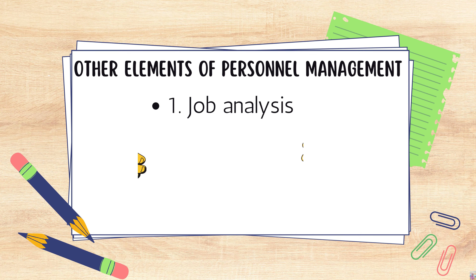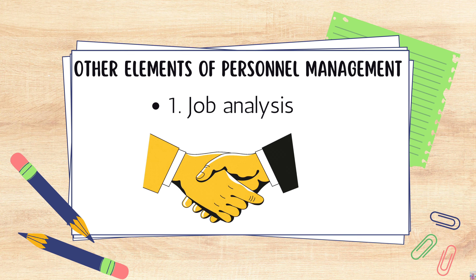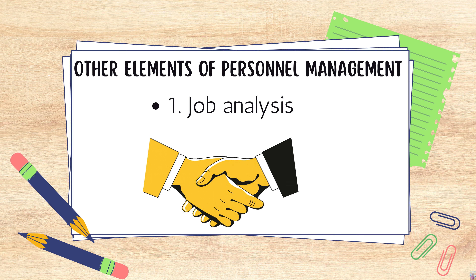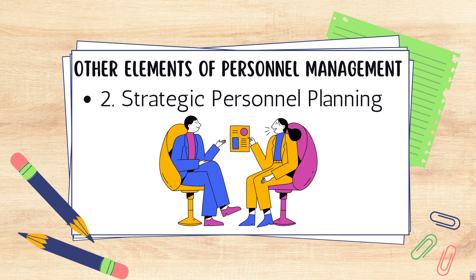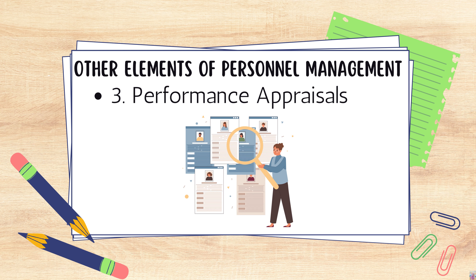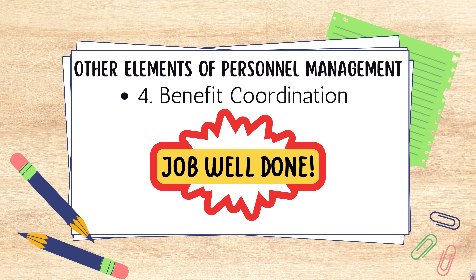Now let's go to the other elements of personnel management. Number one is job analysis — it determines how a position fits into the overall company framework, focusing on the role and not the employee. Number two is strategic personnel planning — it involves hiring the most qualified individual to fit a necessary role in an organization. Number three is performance appraisals — professionals in personnel management decide how often employees are assessed and the methods used to rate employee performance. Number four is benefit coordination — determining the type of benefits employees receive and planning for their distribution is an essential part of personnel management.